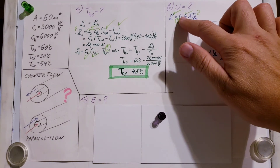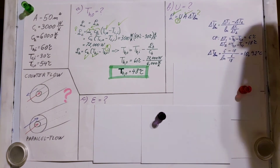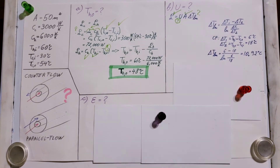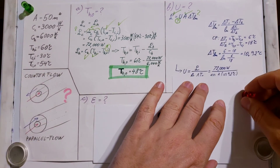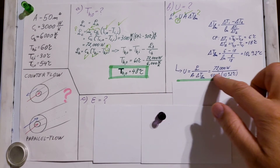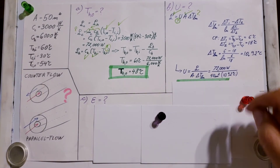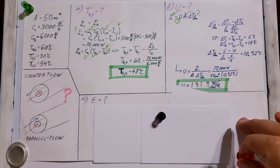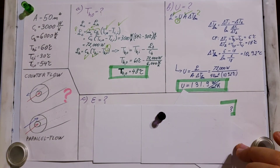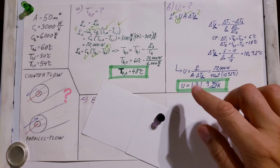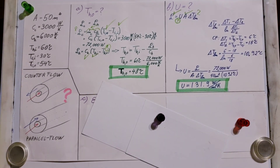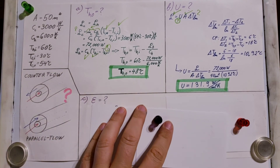Plugging everything we know into the formula — Q, the area, and the log mean temperature difference of 10.92°C — and solving for the overall heat transfer coefficient U, we find a value of 131.9 watts per meter squared kelvin.